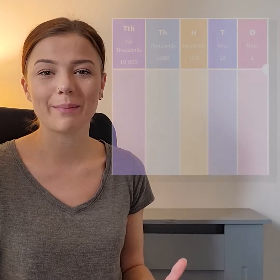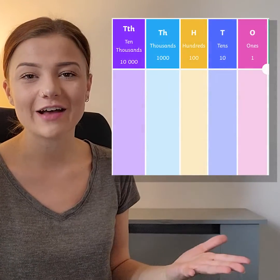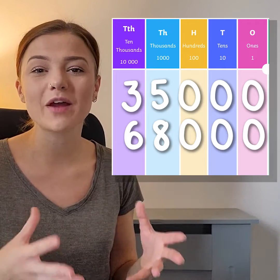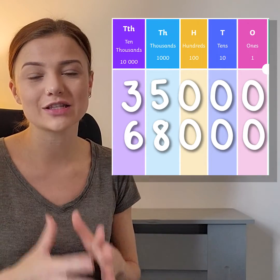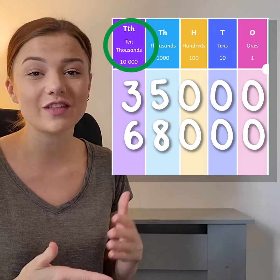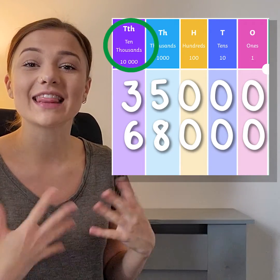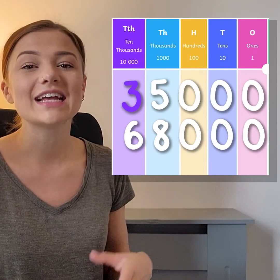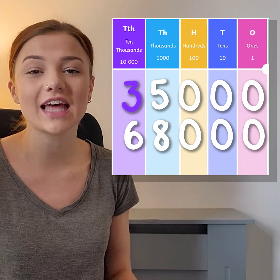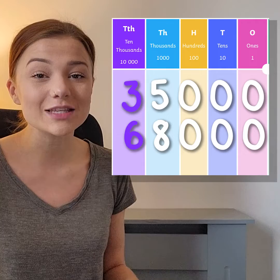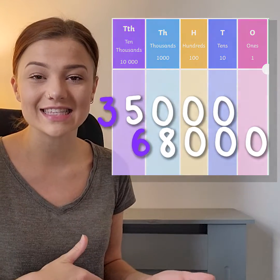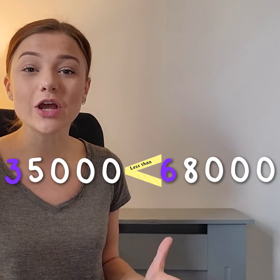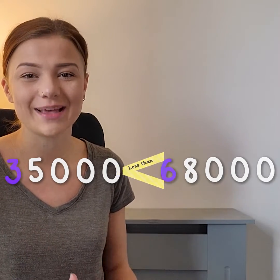Let's compare two more numbers: 35,000 and 68,000. Both of these numbers have their highest value digit in the ten thousands column, so we need to see which of these digits is greatest. In 35,000, the digit in the ten thousands column is a three. In 68,000, the digit in the ten thousands column is a six. As we know, three is less than six, so 35,000 is less than 68,000. We can show this using the less than symbol.